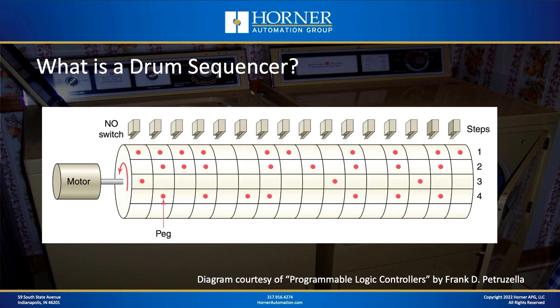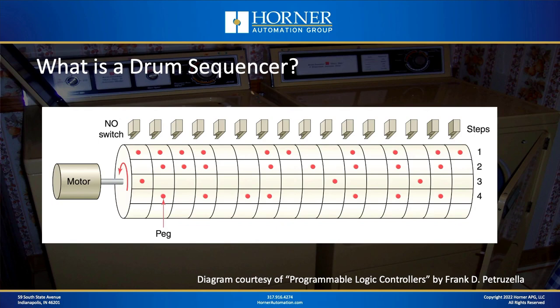Here's an actual drum sequencer drawing. You can see the cylindrical drum as the main part of the graphic. Everywhere you see red dots, that indicates a pin installed in that location. There are up to 16 pins from left to right, and each location lines up with a normally open switch. As the drum rotates by the switches, if there's a pin installed, that corresponding switch will turn on. If there's an empty space, that switch will be off. By installing or uninstalling pins, you can effectively configure a drum sequencer.